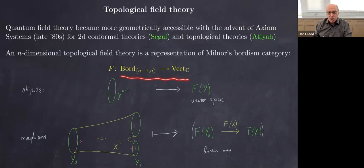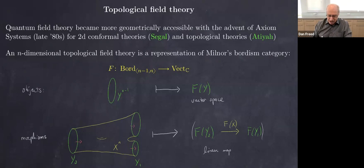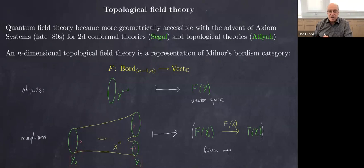What do these axioms say in the topological case? The field theory is a functor between categories. The domain is a bordism category introduced by Milnor in his work on the h-cobordism theorem. The objects of this category are closed manifolds — in dimension n, the objects are dimension n minus one closed manifolds — and the functor attaches to each object a vector space. This is a functor from the bordism category to the category of vector spaces.